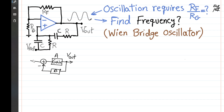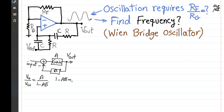In this scheme there is no applied input — we want to get oscillation at the output with zero input. We know the transfer function Vout over Vin is A over (1 minus AB). When Vin is zero, we want the output to be non-zero, which is possible when the denominator (1 minus AB) is also zero. So the condition for oscillation is 1 minus AB = 0, or equivalently AB = 1.